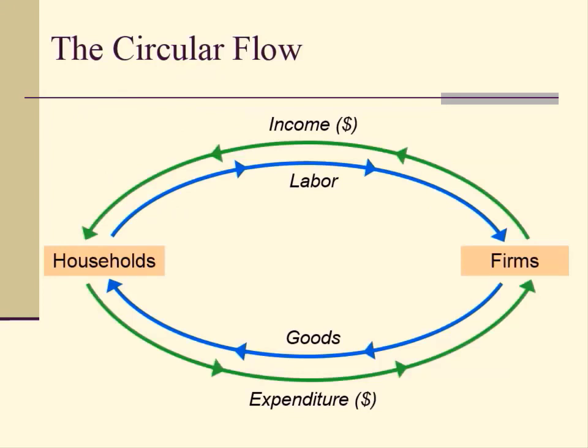In this simple circular flow diagram, households provide factors of production such as labor, and firms utilize the factors of production to produce goods that they sell to households. The real flow goes one direction in blue. In return for the labor the household provides, firms pay salaries to the household — that becomes income to the households. And with that income, households buy goods the firms produce, which becomes revenue to firms. So there's a circle that goes around in green representing the dollar amount.